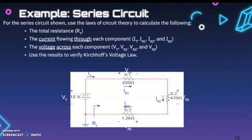Let's take a look at a series circuit example. For the series circuit shown, use the laws of circuit theory to calculate the following: the total resistance; the current flowing through each component — IT, IR1, IR2, and IR3; and the voltage across each component — Vt, VR1, VR2, and VR3. Use the results to verify Kirchhoff's voltage law. This is going to take some time, so pause the video now.